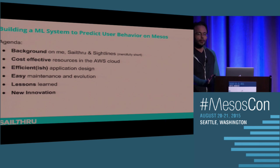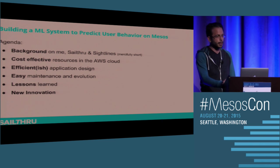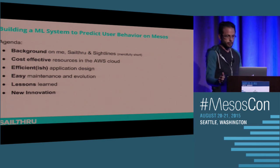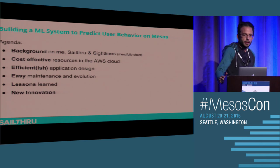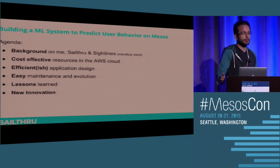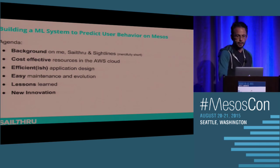Just to give you an overview of where I'm headed with this: I'll start with a little bit of background on me, Sailthrough, and Sightlines, which is the product. We'll get into how we get cost-effective resources in AWS, the application design, how we make maintenance and evolution of this platform easy. Then I'll go through lessons learned building this in a small team at a startup, and talk about some of the new innovation we're driving going forward.